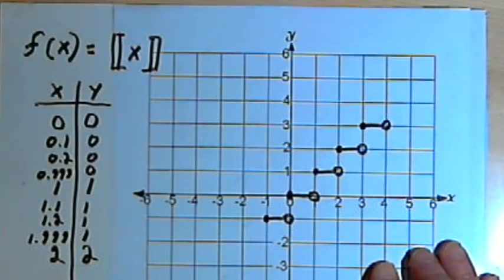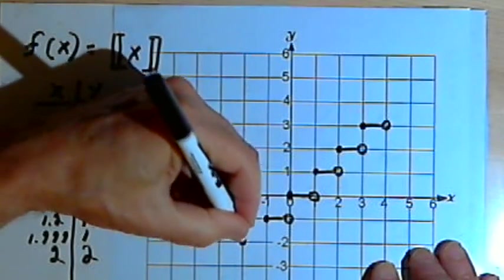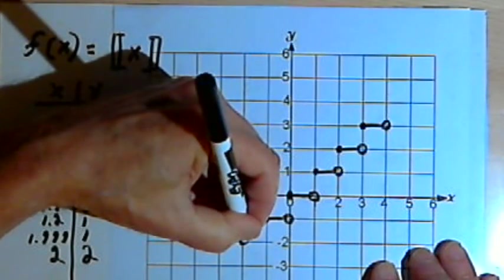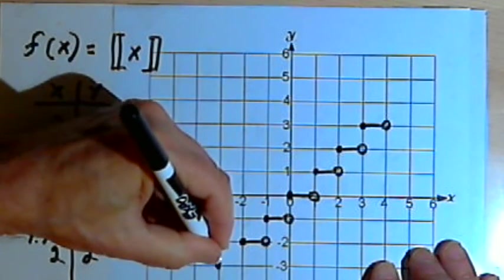And then draw an open circle when I get to y equals 0, move down to (-2,-2), go over to the right, draw another open circle, and so on.